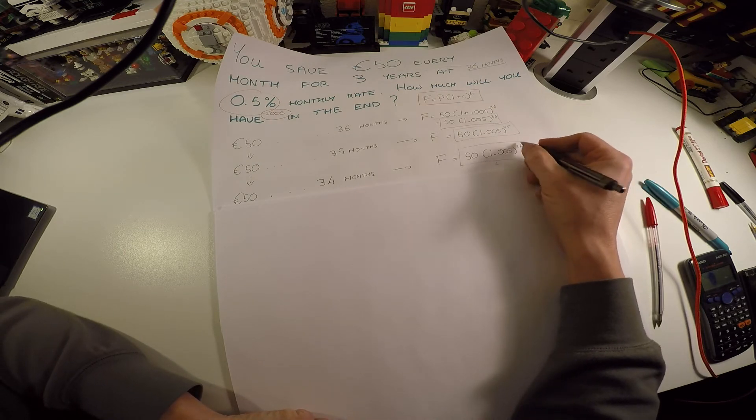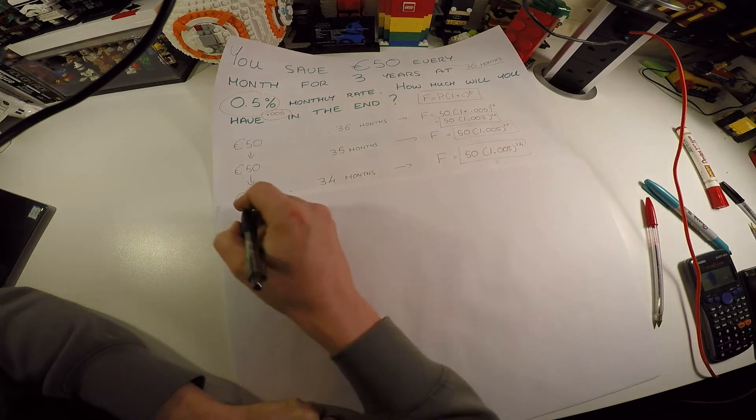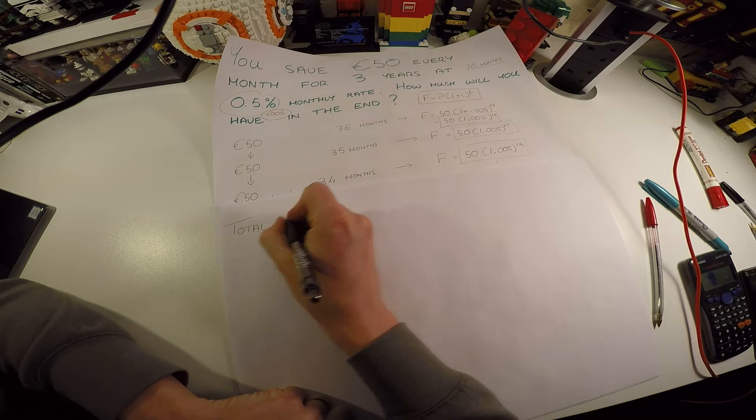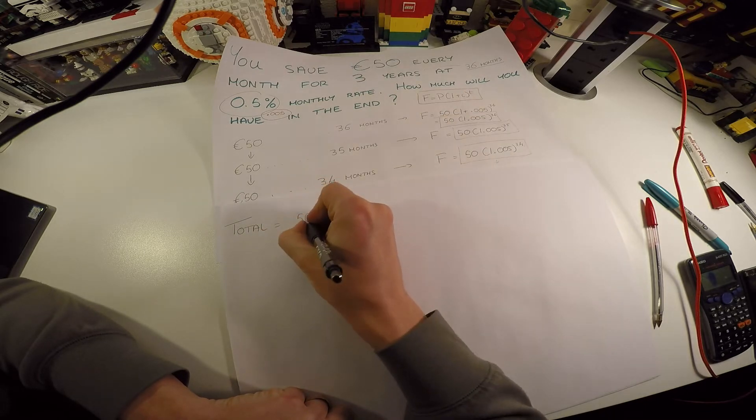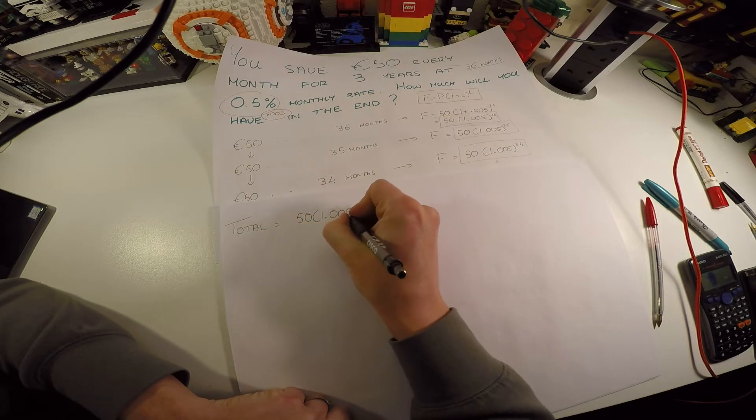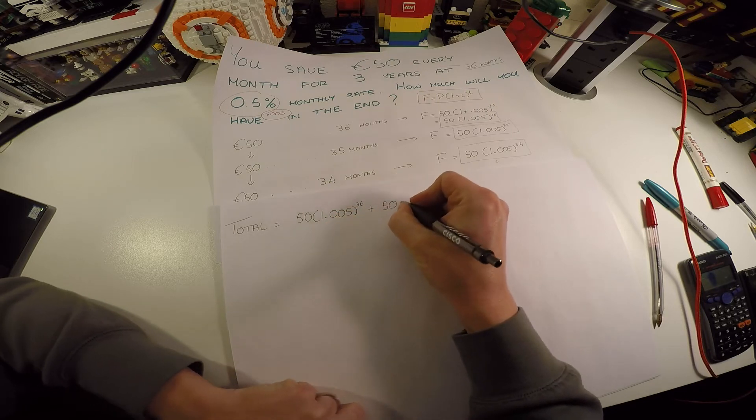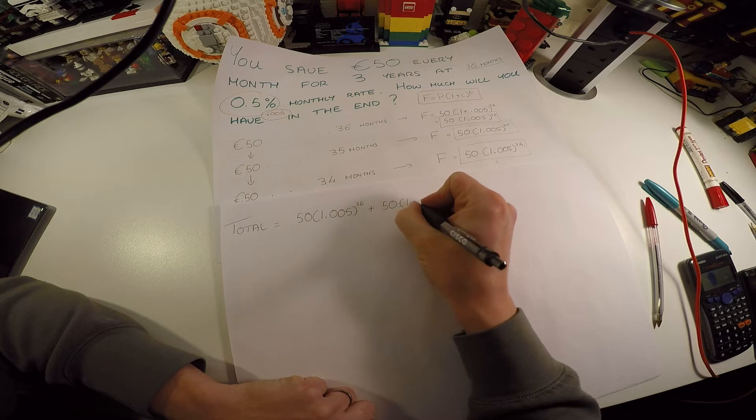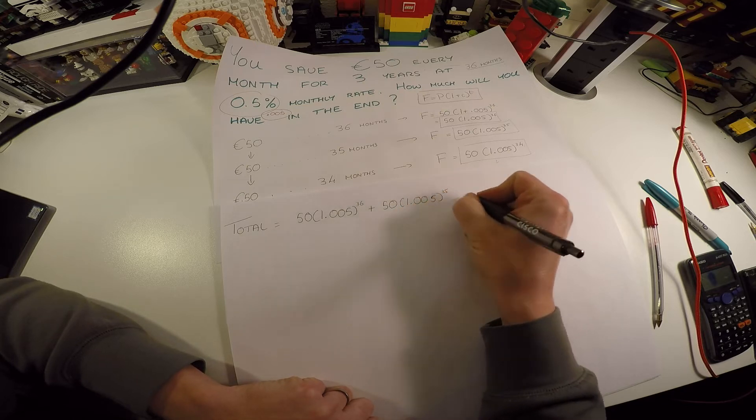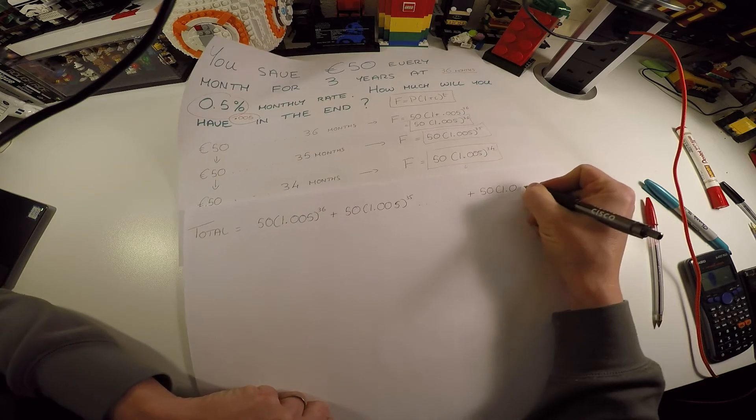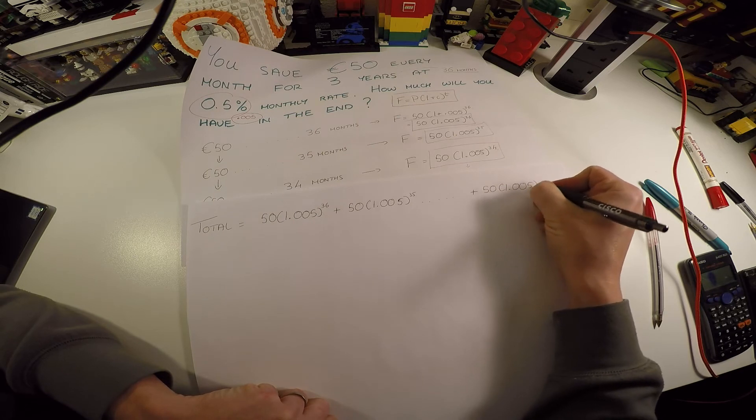So how will that work? Well, hopefully you may see now that our final amount is going to be this plus this plus this and so on till we get to the very last one, which is the last payment that goes in at the start of the last month. It's only in there for one month.